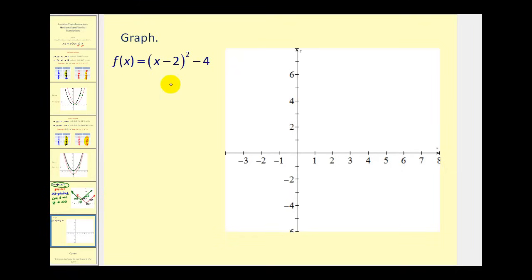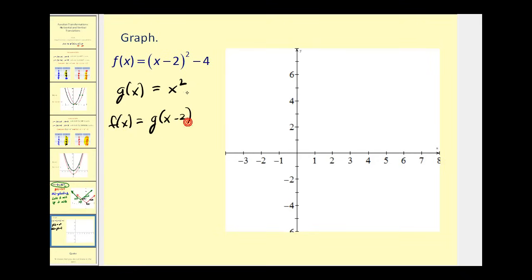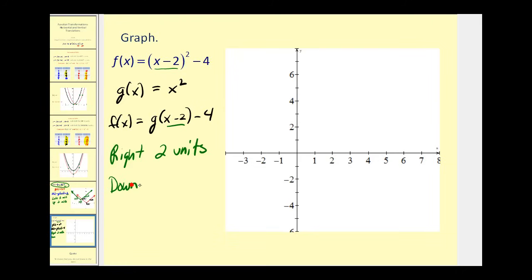Let's try another example. For F of X equals the quantity X minus 2 squared minus 4, the parent function is G of X equals X squared. We can write F of X as G of X minus 2, minus 4. The X minus 2 inside decreases the input by 2, which shifts the graph right 2 units. Subtracting 4 from the function value shifts it down 4 units.